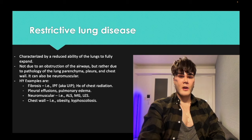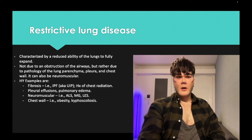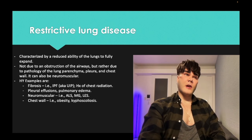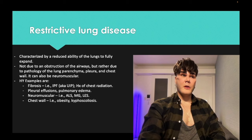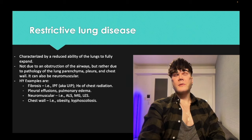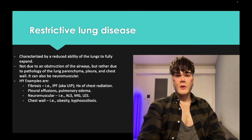Restrictive lung disease can be caused by radiation-induced chest fibrosis, neuromuscular causes like myasthenia gravis, or chest wall issues. Conceptually: obstructive has air trapping and decreased expiration ability; restrictive means we can't inspire because we're restricted from inspiration — it's a problem with inspiring.